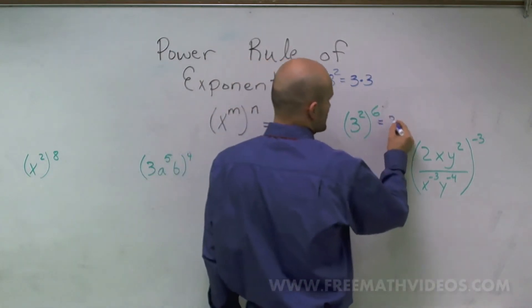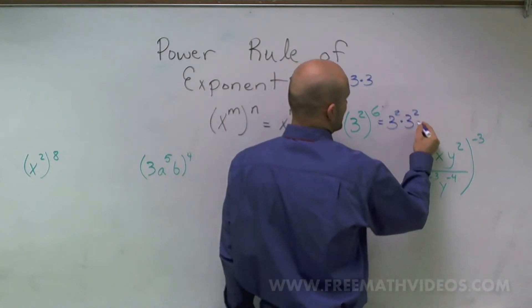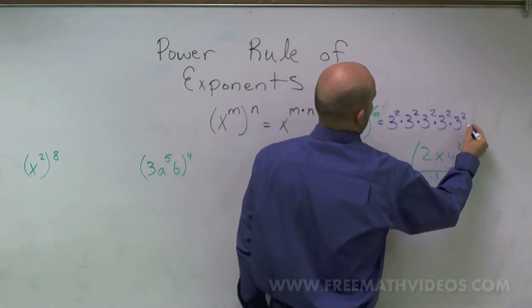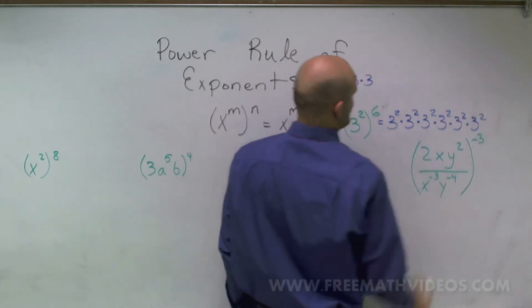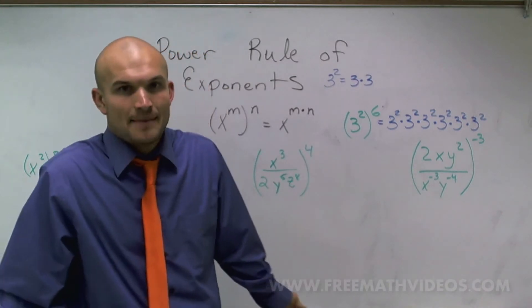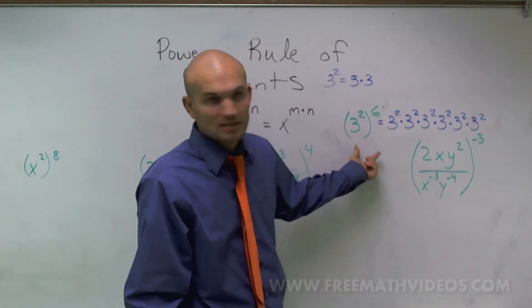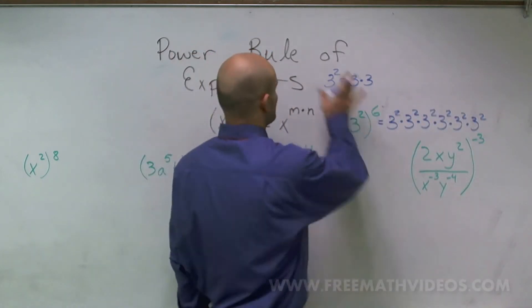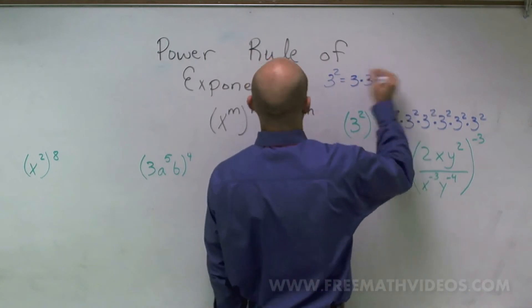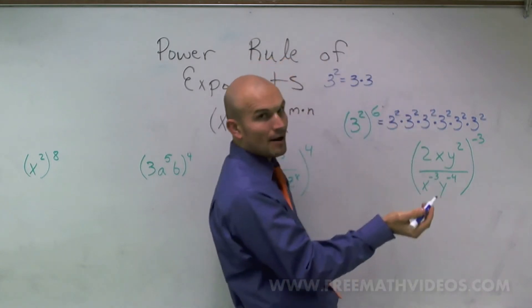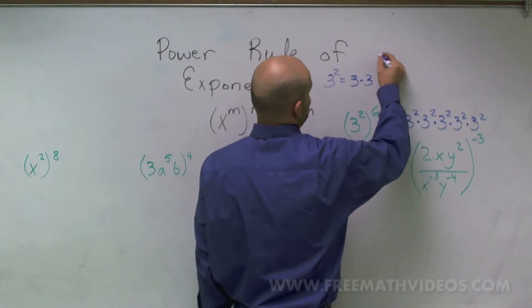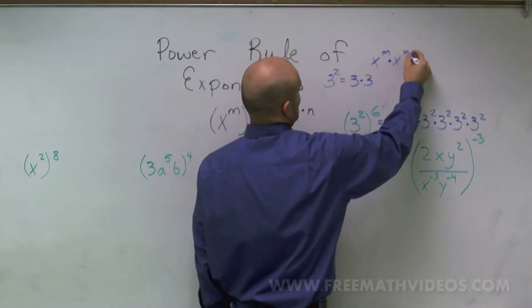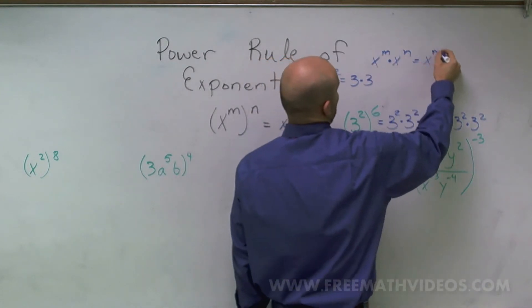So what this means is 3 squared multiplied by 3 squared, six times. You can see the repetition that happens — whatever's inside my parentheses, I'm going to multiply by itself six different times. Now, to do the power rule, we also need to know the product rule, which states that if I have x to the m times x to the n, then I'm going to add my exponents.